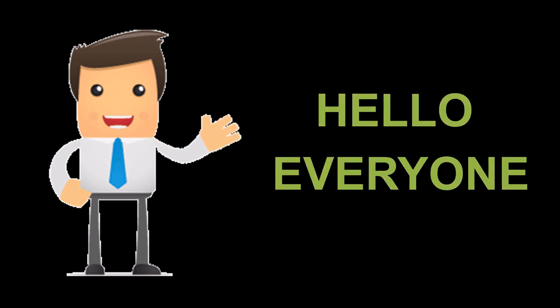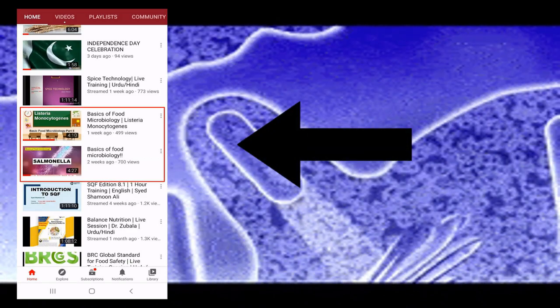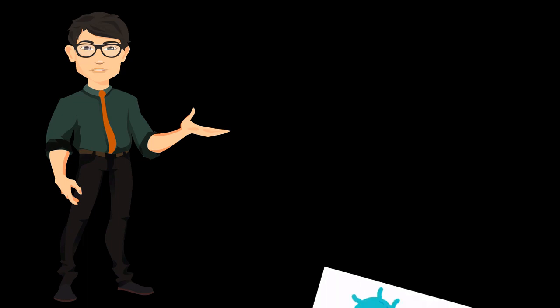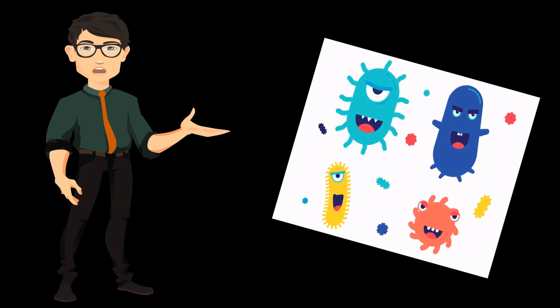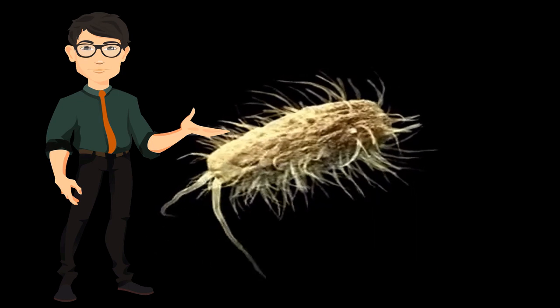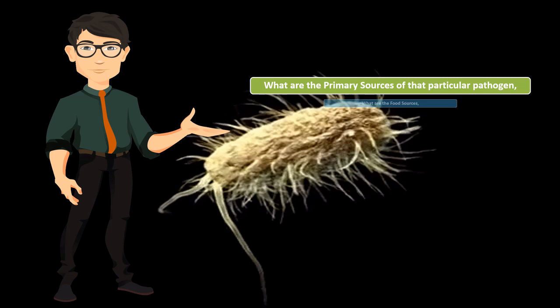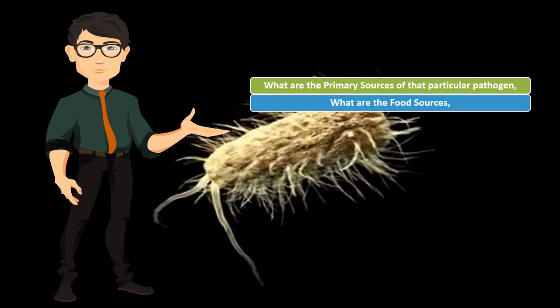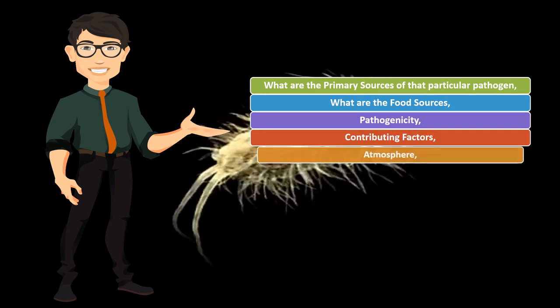Hello everyone. In our previous video we have already discussed about Salmonella and Listeria monocytogenes. We are really happy to see the response, and therefore we are again here with another microorganism — Escherichia coli, or E. coli. As discussed in the previous video, we are going to discuss all the relevant factors which affect this deadly microorganism's growth, like primary sources of the particular pathogen, food sources, pathogenicity, contributing factors, and atmosphere.